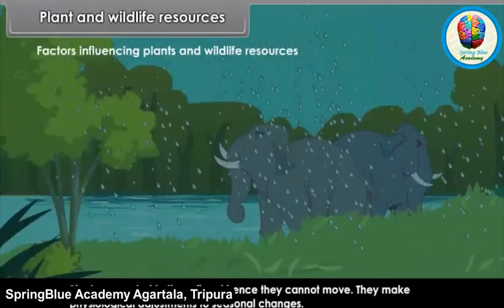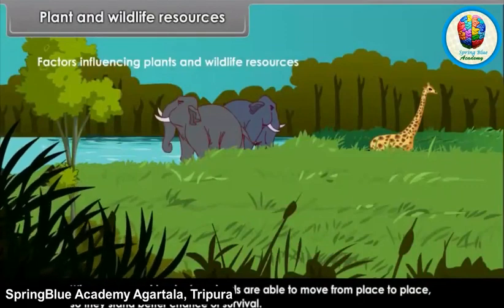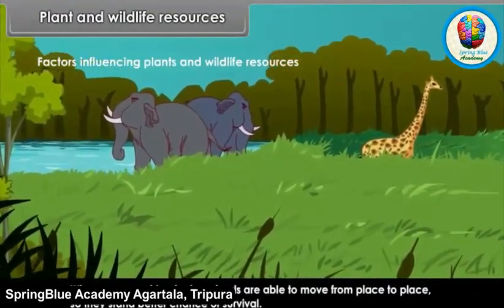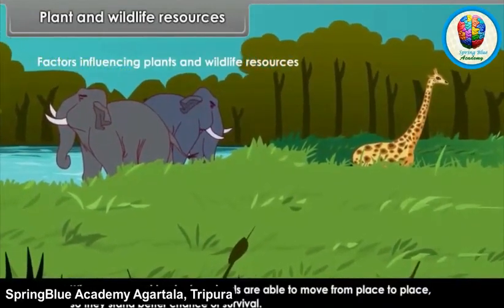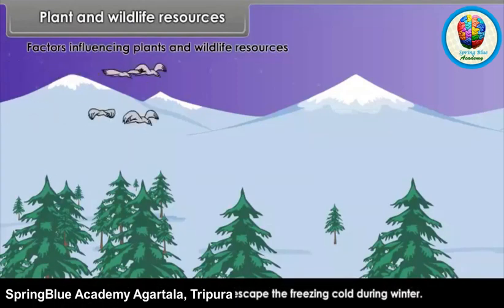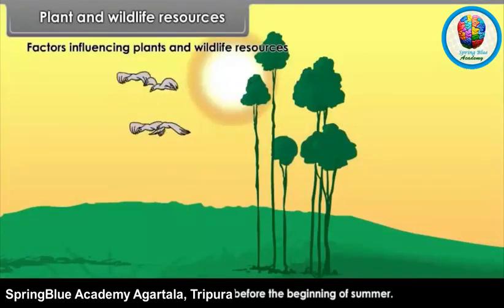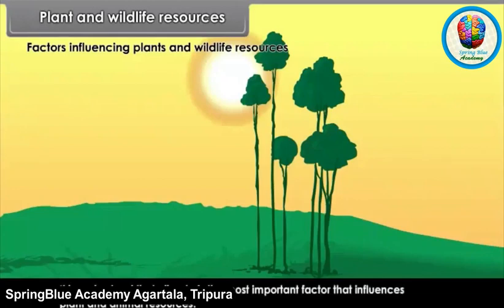Plants make physiological adjustments to seasonal changes. When compared to plants, animals are able to move from place to place, so they stand a better chance of survival. Annual migration of birds and animals is a common feature in many parts of the world. Birds fly thousands of kilometers to escape the freezing cold during winter and go back to their homes before the beginning of summer. It is understood that climate is the most important factor that influences plant and animal resources.